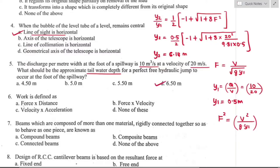Question number six: work is defined as — work occurs if there is movement in the direction of force, and it is a scalar quantity. Work is the product of force into distance. Option A is the right answer.